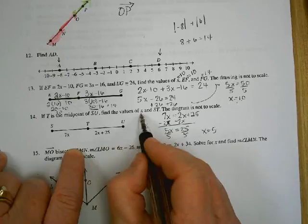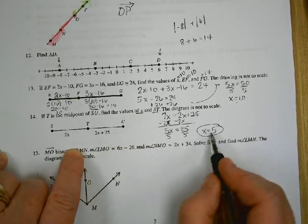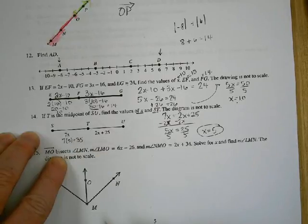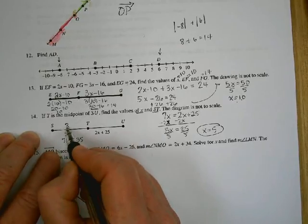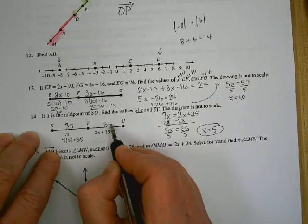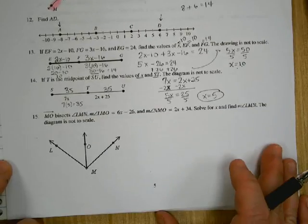Find the values of x. We did that. Now find ST. So I'm going to come over here. 7 times 5 is 35. Well, if ST is 35, what's TU? 35. And the whole thing would turn out to be 70. They didn't ask you for that. That's just a little extra.